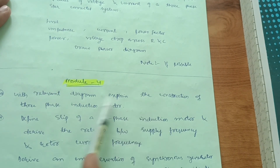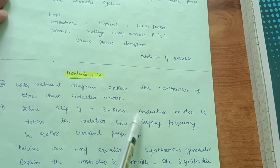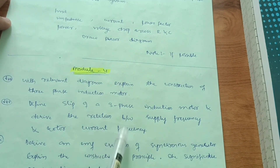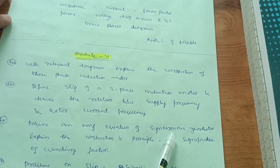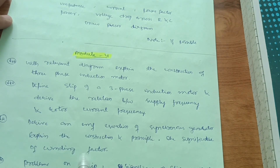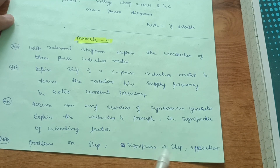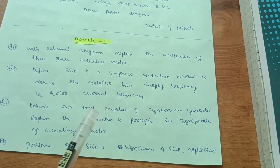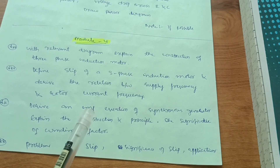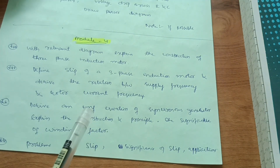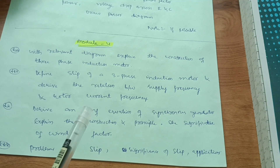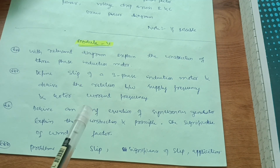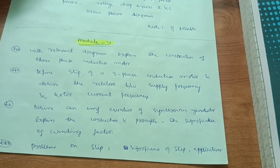In Module 4, cover: With a relevant diagram, explain the construction of a three-phase induction motor. Define slip of a three-phase induction motor and derive the relationship between supply frequency and rotor current frequency. Derive the EMF equation of a synchronous generator and explain its construction, principle, and the significance of winding factor. Also focus on problems on slip, significance of slip, applications of slip, and rotating magnetic field. Focus more on theory than numericals since many numericals are tough, but go through some problems from previous question papers to conquer this subject.